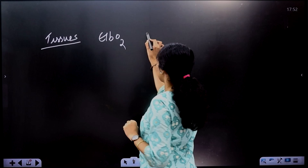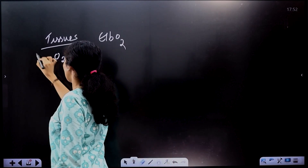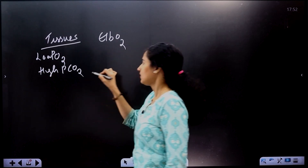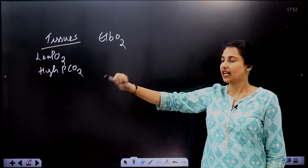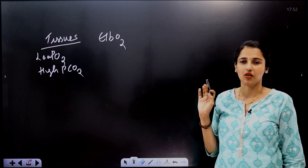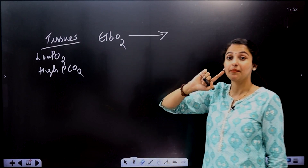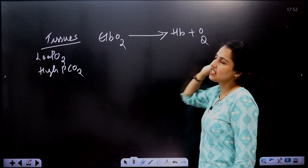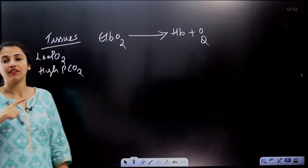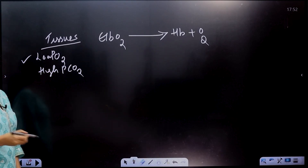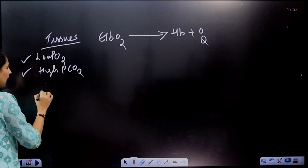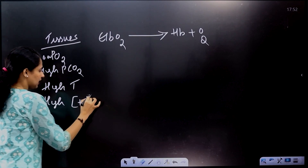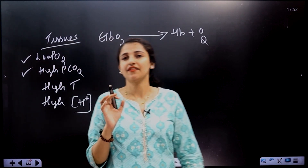At the tissues, oxygen partial pressure is low and carbon dioxide partial pressure is high due to respiration. These conditions — low partial pressure of oxygen, high partial pressure of carbon dioxide, high temperature, and high concentration of H⁺ ions — cause dissociation of oxyhemoglobin, releasing oxygen for the tissues.